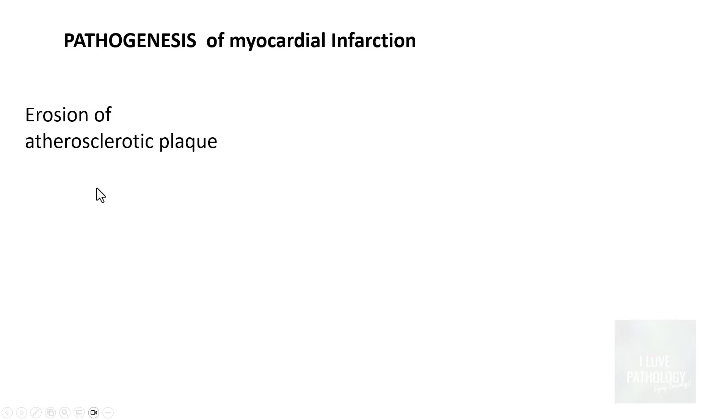The most common inciting agent for the obstruction of these coronary blood vessels is the erosion of atherosclerotic lesions. Why does this erosion occur? That is because of either endothelial injury or because of intraplaque hemorrhage or mechanical forces.